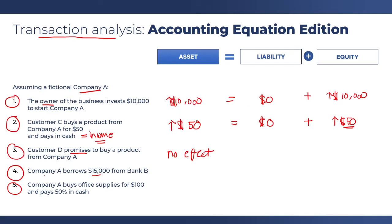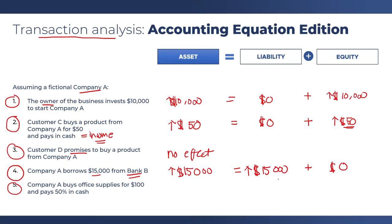The fourth one: company A borrows $15,000 from bank B. Since it is cash again, we increase our cash by $15,000. And since it is from bank B, a creditor, we increase our liabilities by $15,000 with no effect on equity, because this is money coming from a creditor and not from the owner.